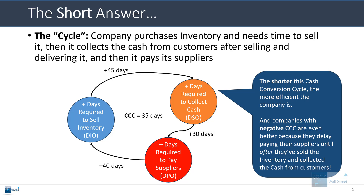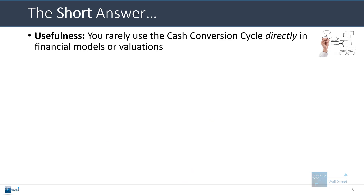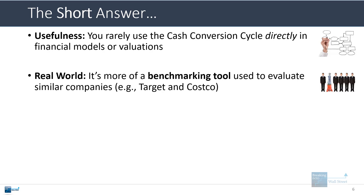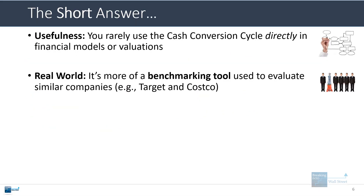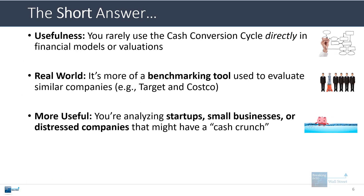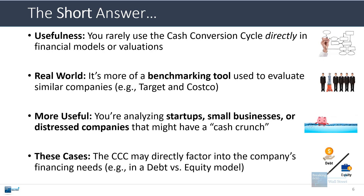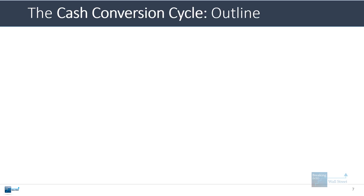The shorter this cash conversion cycle, the more efficient the company is. Companies with negative cash conversion cycles are even better because it means they delay paying their suppliers until after they've sold inventory and collected cash from customers, which is viewed as very favorable. In terms of usefulness, you rarely use the cash conversion cycle directly in financial models or valuations — it's more of a benchmarking tool. It's more useful when analyzing startups, small businesses, or distressed companies with serious cash flow issues, where it might factor into financing needs like short-term loans.